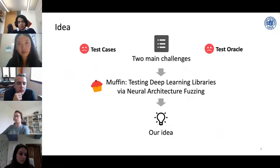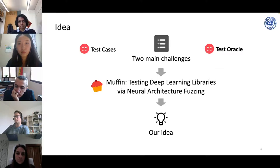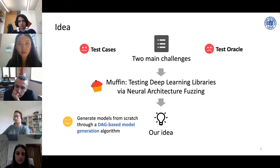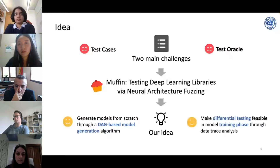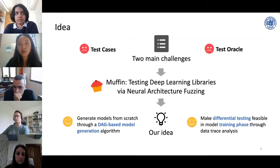There are two main challenges: how to obtain test cases and how to obtain a test oracle. To tackle the test case challenge, we propose a DAG-based model generation algorithm to generate diverse models from scratch, covering diverse DL library APIs. For the test oracle challenge, we propose a set of metrics based on data trace analysis. These metrics measure inconsistency in the model training phase, and based on these metrics we adopt differential testing to detect training-related bugs.